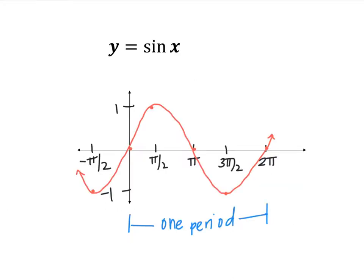This is the parent function for y = sine of x. The biggest sine can ever be is 1 and the smallest is negative 1. Normally we graph one period of sine, between 0 and 2π, using anchor points at 0, π/2, π, 3π/2, and 2π. Sine starts at 0, goes up, middle, down, and middle, continuing to repeat forever because the domain is all real numbers. This is a parent function you should have memorized.